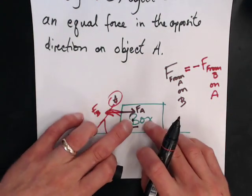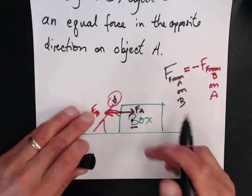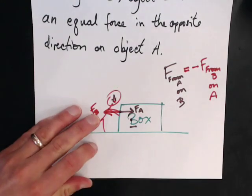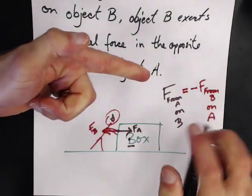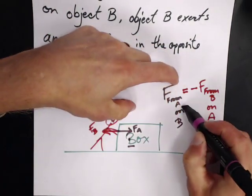So as hard as A is pushing on B, B is pushing on A. But the key to Newton's third law and not getting lost is this little piece right here.